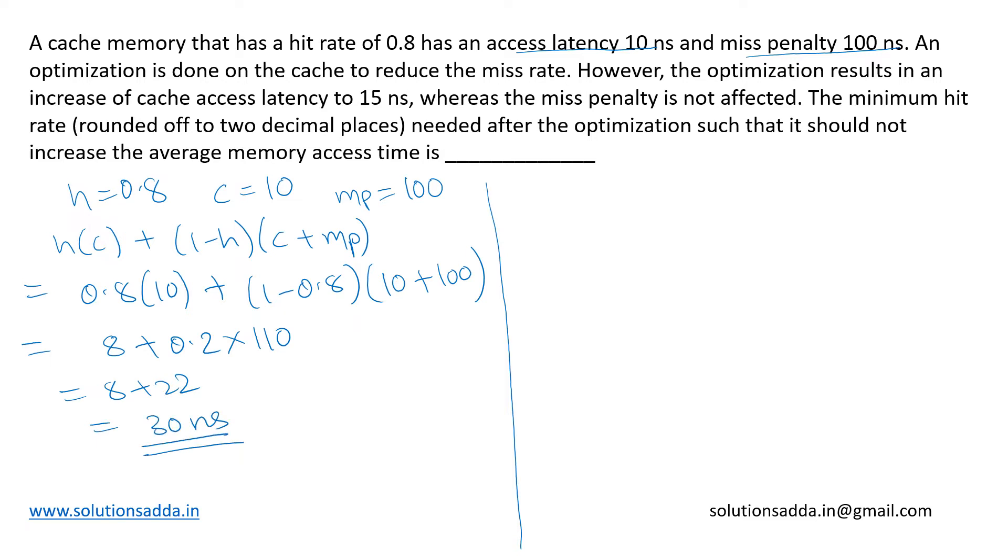This is the average memory access time, which will be the same time t required in case 2. Here we have t equal to 30. The hit rate is what we need to calculate. The cache access time has been increased from 10 to 15 nanoseconds, and the miss penalty still remains the same, which is 100.